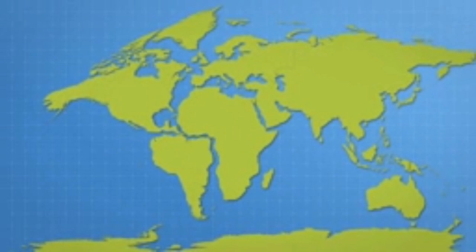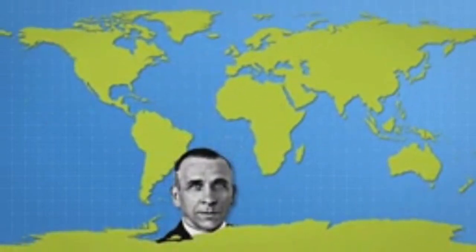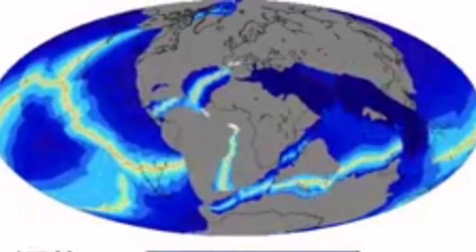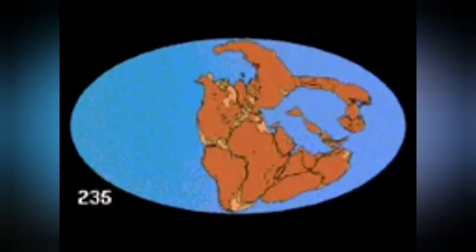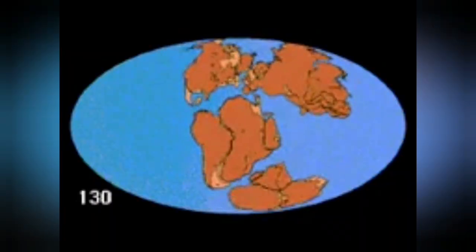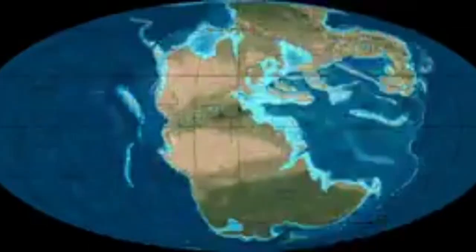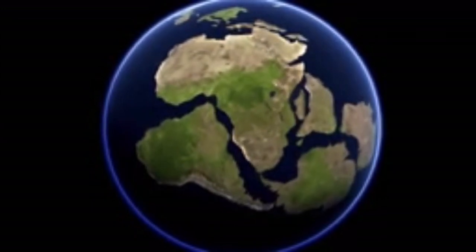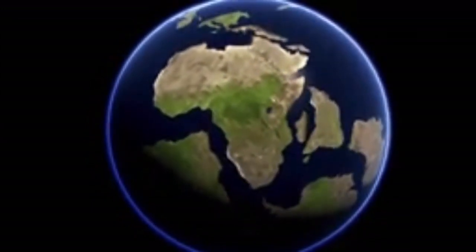First, we discovered that certain coastal areas of the world — for example Africa and South America — match together, as if they have been joined together in the past. Alfred Wegener discovered this first. Now we know that the earth's continents are not in their original positions; they have moved many times over since the creation of the earth four and a half billion years ago.